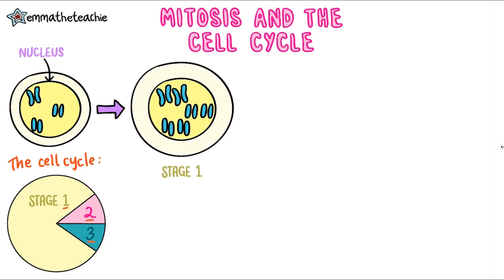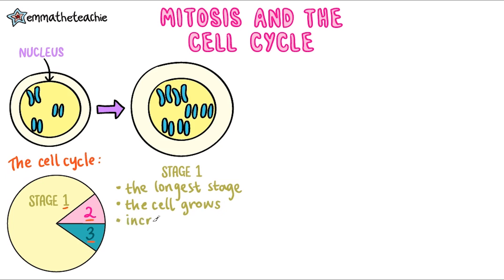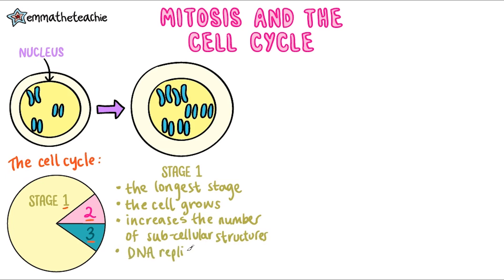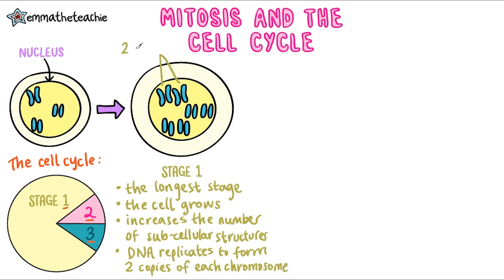Let's start with stage 1. You can see from the pie chart that stage 1 is the longest of the three stages. In preparation for cell division it has a lot to do. First of all the cell will grow, gaining mass. Secondly it will also increase the number of sub-cellular structures such as ribosomes and mitochondria. Really importantly, the DNA then replicates, forming two copies of each chromosome. In a human body cell this would mean that by the end of stage 1 the cell contains 92 chromosomes instead of 46.